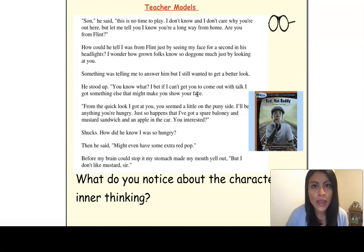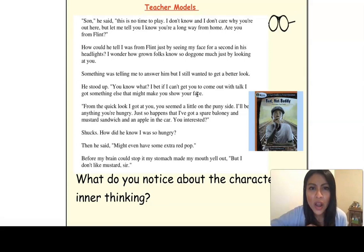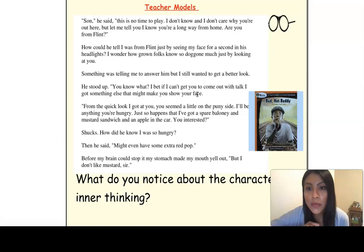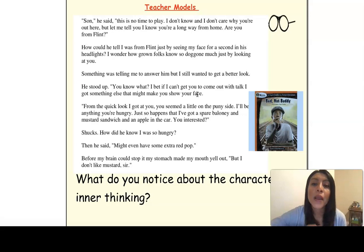He said, 'Son, this is no time to play. I don't know and I don't care why you're out here. But let me tell you how I know you're a long way from home. Are you from Flint?' How could he tell I was from Flint just by seeing my face for a second in his headlights? I wonder how grown folks know so doggone much just by looking at you. Something was telling me to answer him, but I still wanted to get a better look. He stood up. 'You know what? I bet if I can't get you to come out with talk, I got something else that might make you show your face. From the quick look I got at you, you seemed a little on the puny side. But I'll bet anything you're hungry. Just so happens that I've got a spare bologna mustard sandwich and an apple in the car. You interested?' Shucks. How did he know I was so hungry? Then he said, 'Might even have some extra red pop.' Before my brain could stop it, my stomach made my mouth yell out, 'But I don't like mustard, sir.'